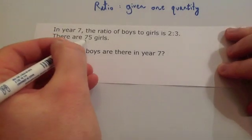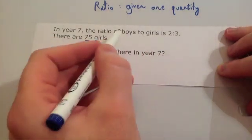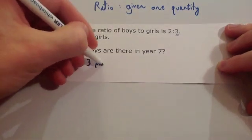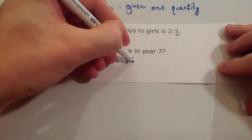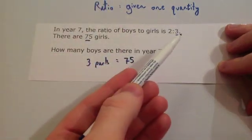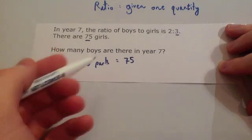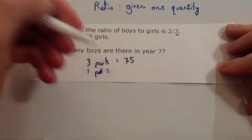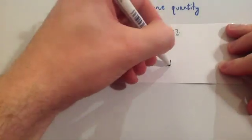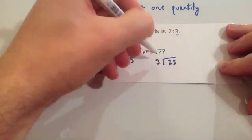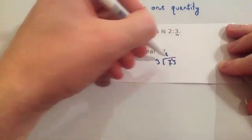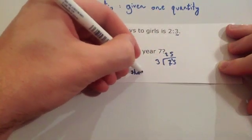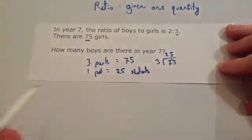You know there are 75 girls, and the girls part of the ratio — boys to girls — is three. So three parts equals 75. Always find what one part is, so divide by three. One part equals 75 divided by three: three into seven goes twice remainder one, three into 15 goes five times, so one part equals 25 students.